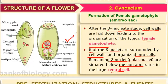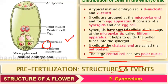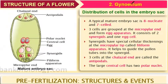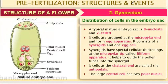The polar nuclei are positioned below the egg apparatus and are not surrounded by cell walls. Our mature female gametophyte is seven-celled and eight-nucleated. Three cells are grouped at the micropylar end and form the egg apparatus; the polar nuclei are in the central cell below the egg apparatus.